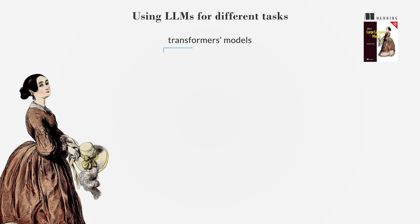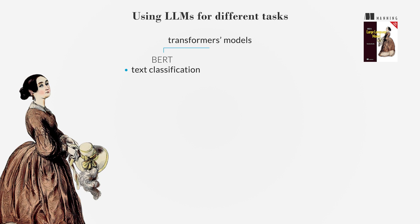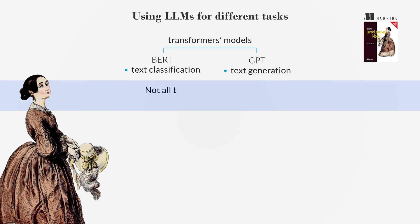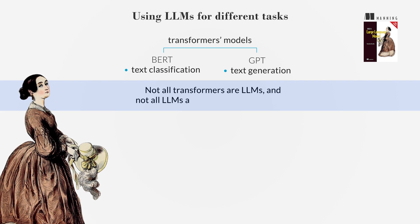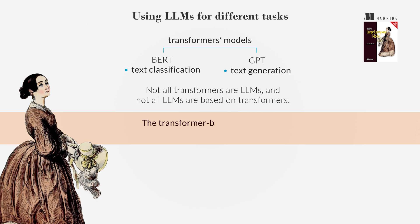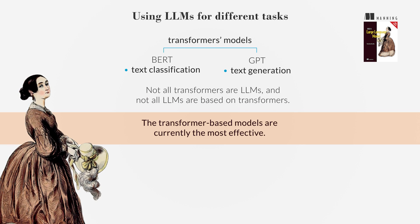Transformers have evolved into models like BERT for text classification and GPT for text generation. Not all transformers are LLMs, and not all LLMs are based on transformers, but the transformer-based models are currently the most effective.